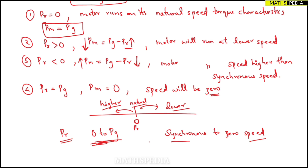In rotor resistance control we are wasting the power in external resistors, but here in slip power recovery the power is injected back. There are two schemes classified as slip power recovery schemes: Static Scherbius drives and Static Kramer drives. These will be explained in the next videos.